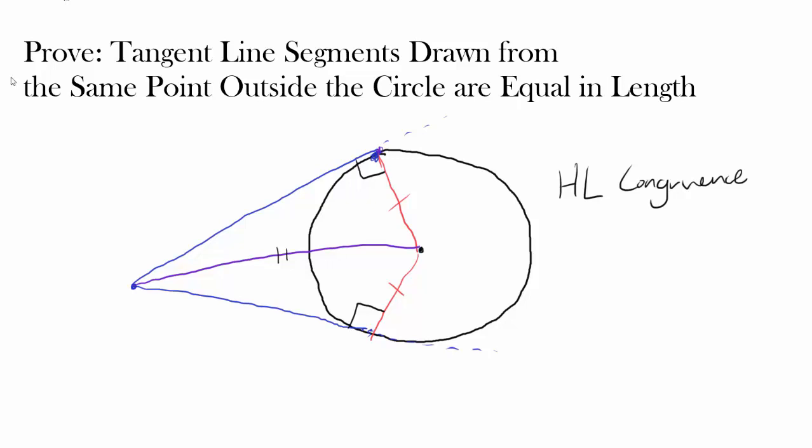You know this triangle, this orange triangle, and this blue triangle are congruent. And that's telling you this length is equal to this length, and the tangent line segments drawn from the same point outside the circle are the same in length.